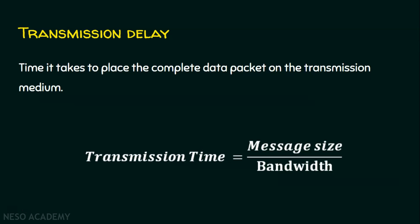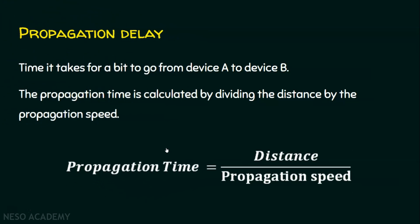Now a small recap on propagation delay. Propagation delay means it is the time it takes for a bit to go from one device to another device. If device A wants to send a data packet to device B, how much time it takes for a single bit to travel from device A to device B is the propagation delay. Propagation delay is calculated by dividing the distance by the propagation speed. If the distance is high, the propagation delay will also be high. If the propagation speed is high, we will have a smaller propagation delay.